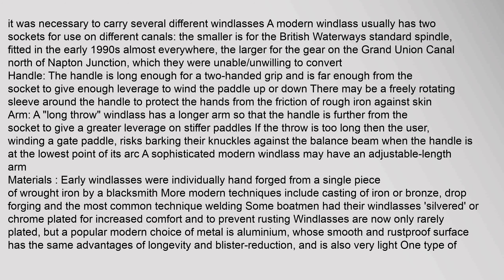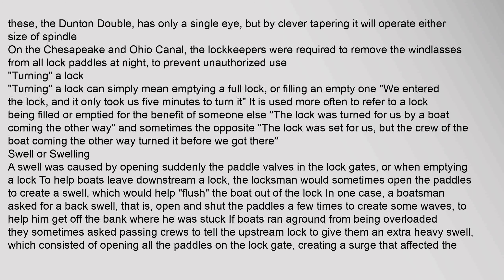A modern windlass usually has two sockets for use on different canals: the smaller for the British Waterways standard spindle fitted almost everywhere since the early 1990s, and the larger for the gear on the Grand Union Canal north of Napton Junction. The handle is long enough for a two-handed grip with enough leverage to wind the paddle up or down. A long-throw windlass has a longer arm giving greater leverage on stiffer paddles. On the Chesapeake and Ohio Canal, lock keepers were required to remove the windlasses from all lock paddles at night to prevent unauthorized use.